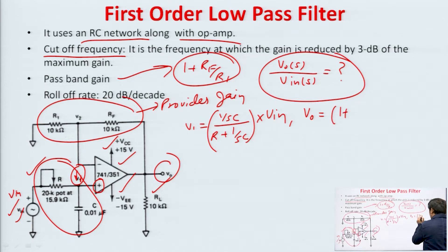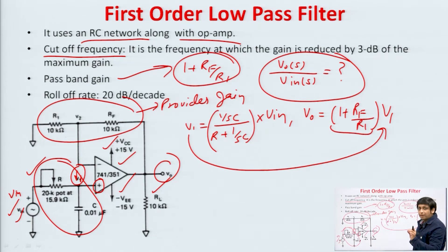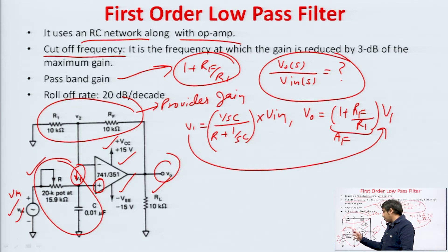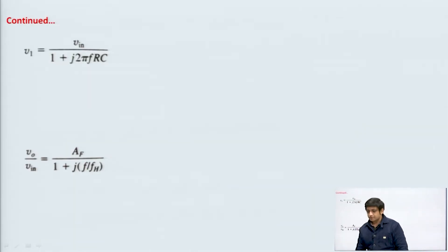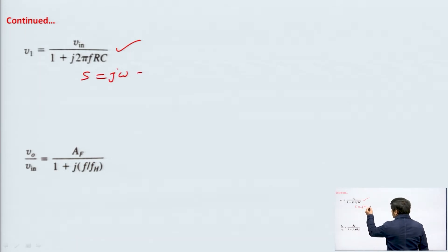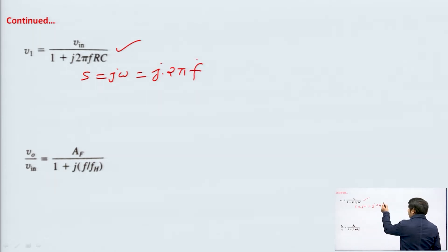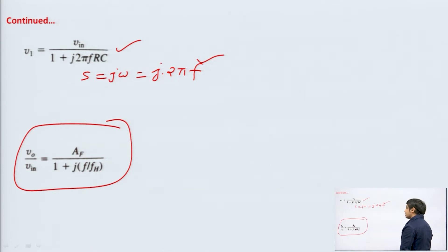V_out will be equal to (1 + Rf/R1) into V1. Now we can put the value of V1 here and calculate V_out upon V_in. The term (1 + Rf/R1) is called the pass band gain and can be represented as Af. After rearranging the terms we get V1 equal to V_in upon (1 + j·2π·f·R·C), because the s term gives s = jω and ω = 2πf, where f is the frequency of the input signal. After rearranging the terms we get V_out/V_in equal to Af upon (1 + j·(f/fH)).